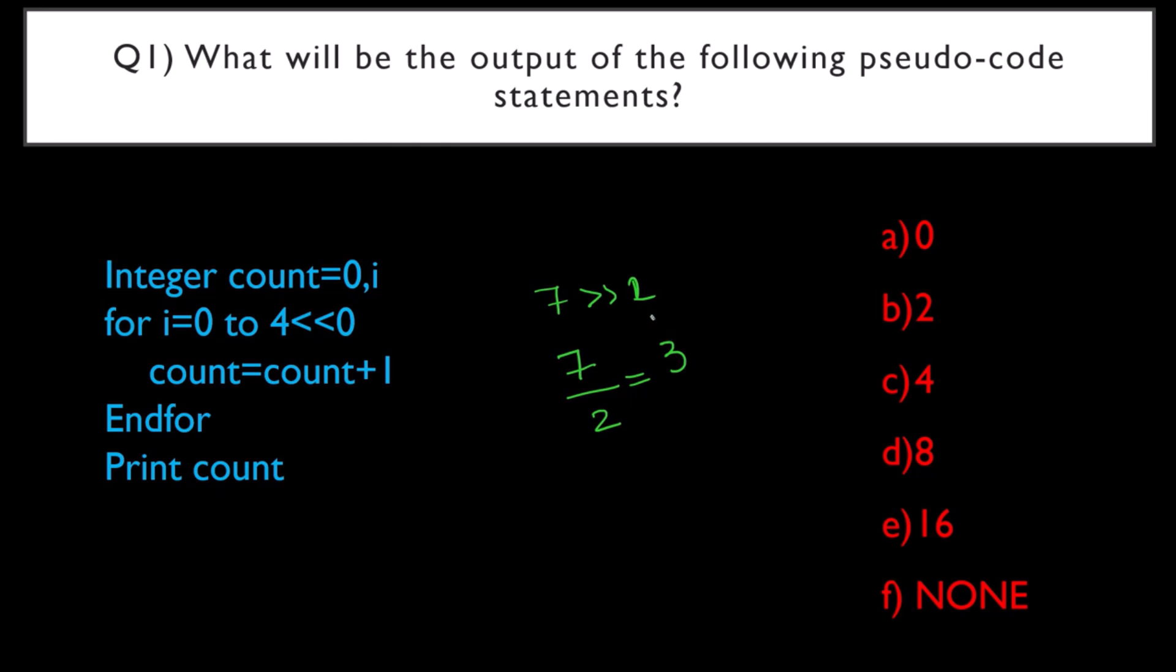If I right shift 7 by 2 times, what I am going to do is take this 3 and again divide by 2. What will be the answer? 1.5, so this will be 1. So 7 is this. Right shifting 1, it will become this. If you right shift 2 times, it will become this, which is nothing but 1. That is the whole concept behind left shift and right shift.